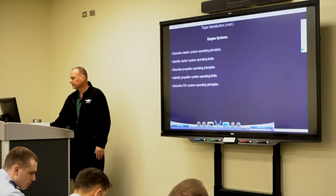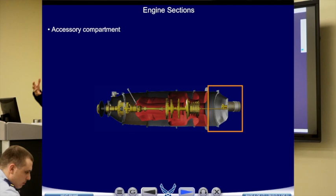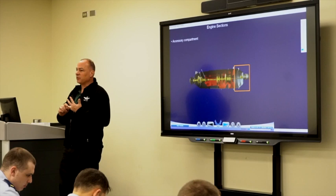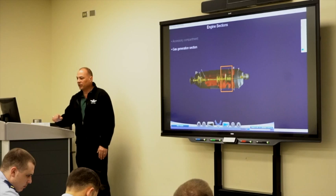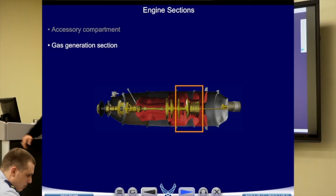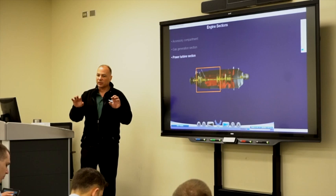We have the accessory compartment — that's that shiny compartment just aft of the Folgers-can-looking starter generator. In the accessory compartment you've got the low and high pressure engine-driven fuel pumps, the oil pump, the hydraulic pump, and the starter generator. The gas generation section is also the compression and combustion chamber. Then you've got the power turbine section. So there are really three sections: accessory, gas generation, and power turbine.